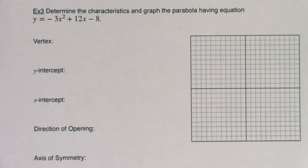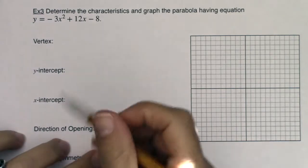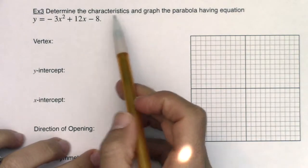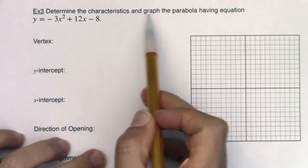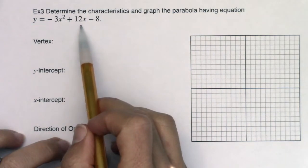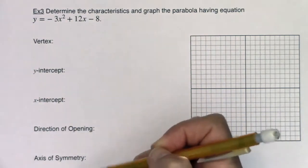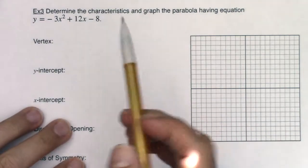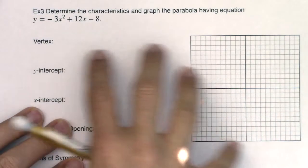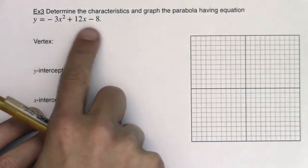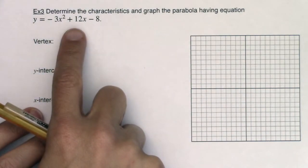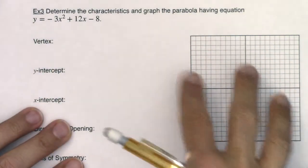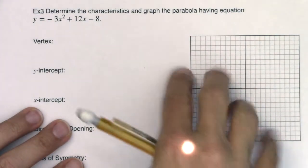Welcome to Example 3. Example 3 has the same directions as Example 1: determine the characteristics and graph the parabola having this equation. You can see all these traits that we have to list out — they're the exact same traits as Example 1. But the main difference between Example 1 and Example 3 is that here I'm giving you the equation of the graph, whereas in Example 1 I gave you the graph of the parabola.